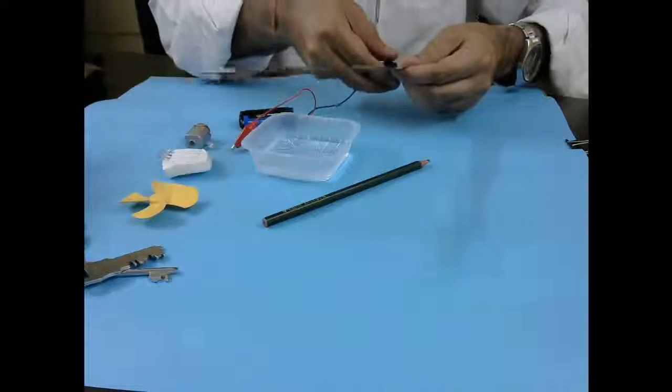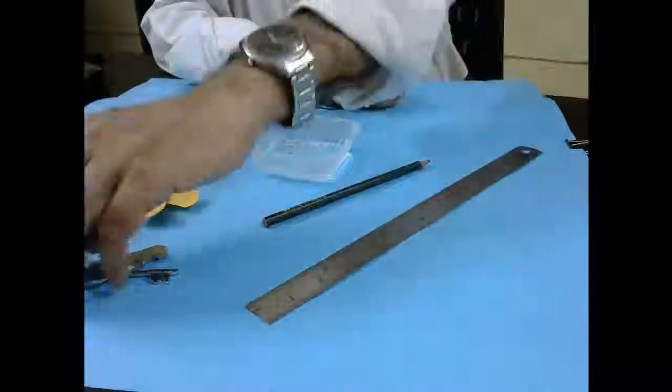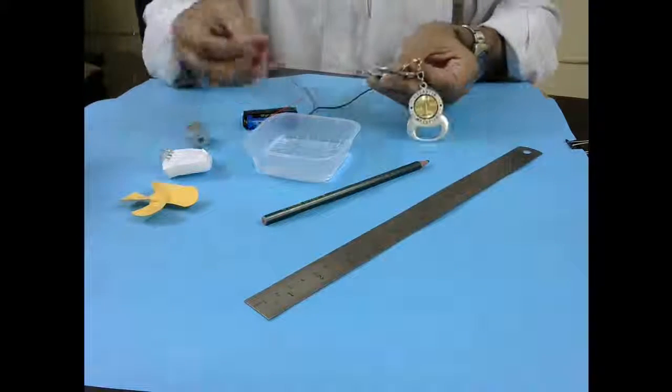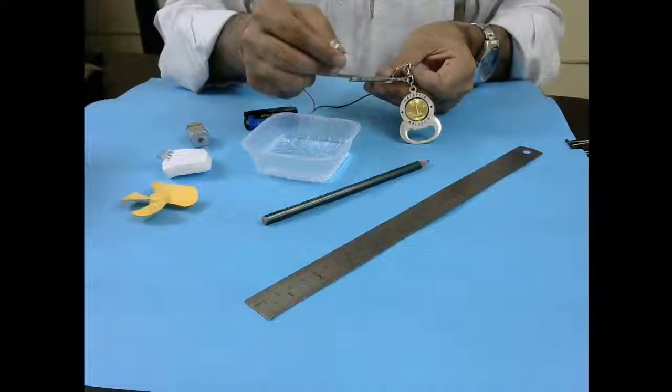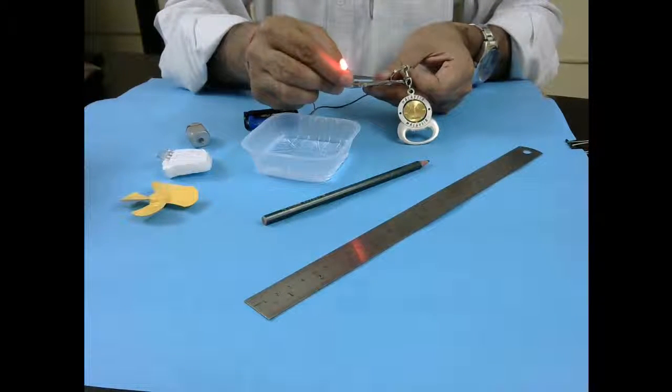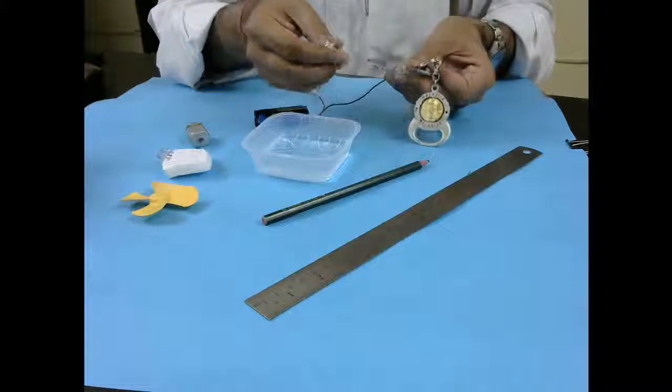Similarly I can also try metal keys. So if I connect my connector here and try to connect it on the key, again the LED lights up which means this is also metal and this is also a good conductor of electricity.